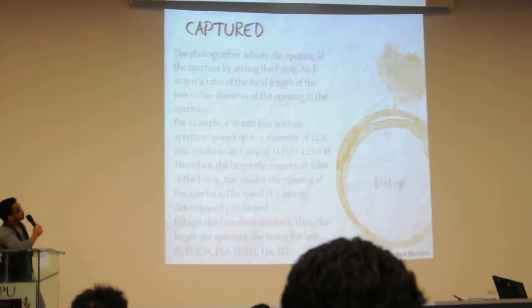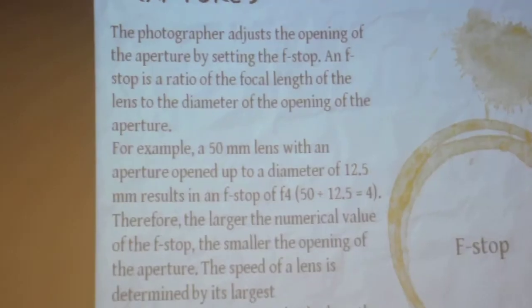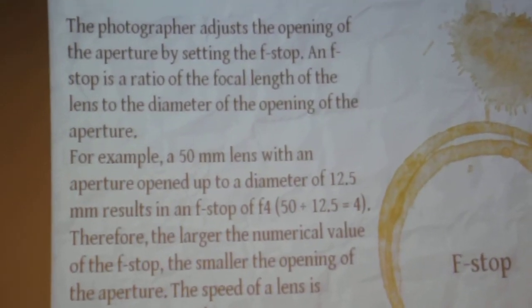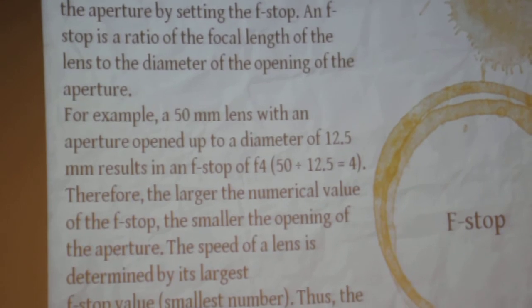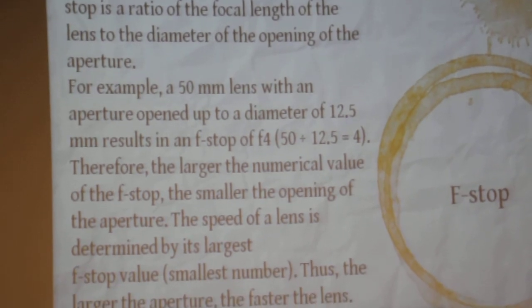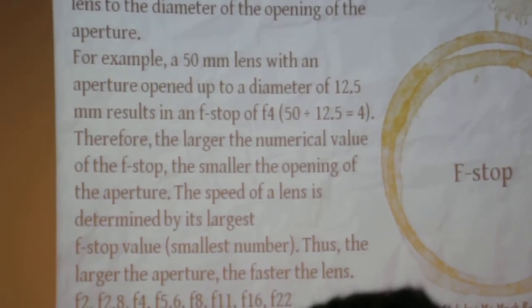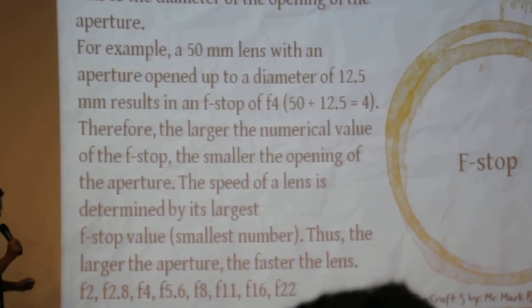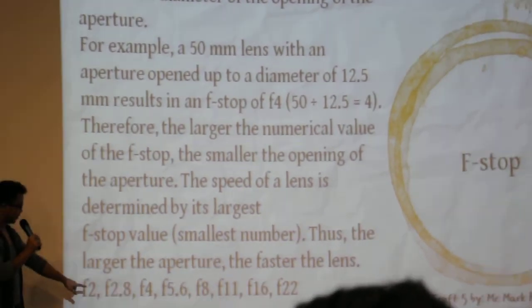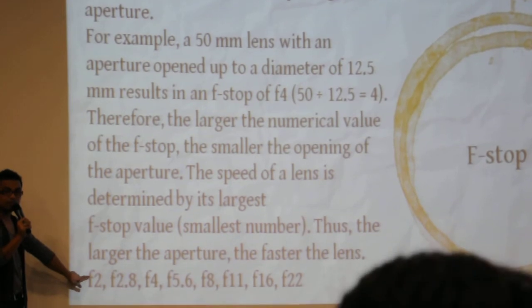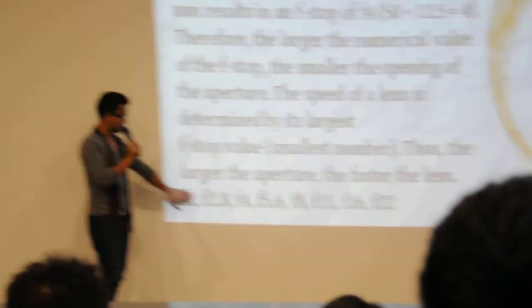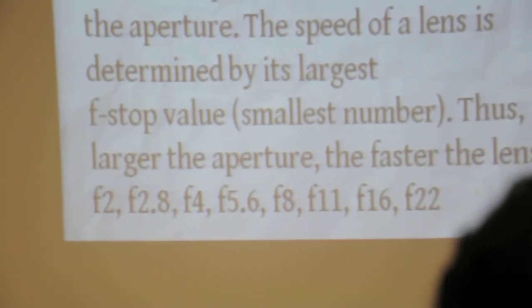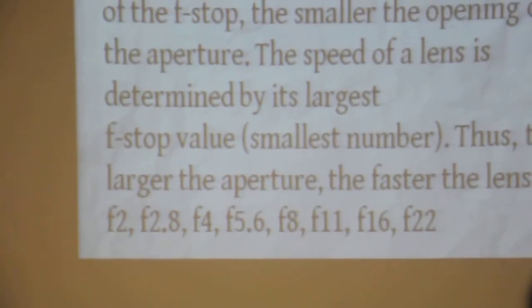The f-stop. The photographer adjusts the opening of the aperture by setting the f-stop. An f-stop is the ratio of the focal length of the lens to the diameter of the opening of the aperture. Usually you'll see in your screens these numbers — alphanumeric — f2, f2.8. That is how you measure f-stop.